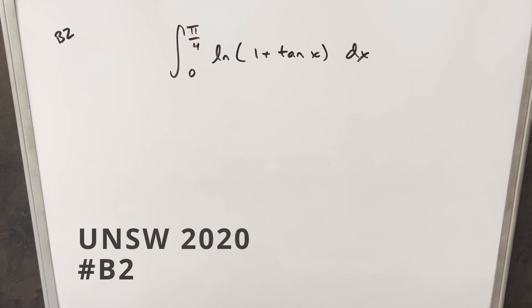Okay, we have here a good problem from the UNSW 2020 integration B, problem B2. We have the integral from 0 to π/4, natural log, 1 plus tan x, dx.